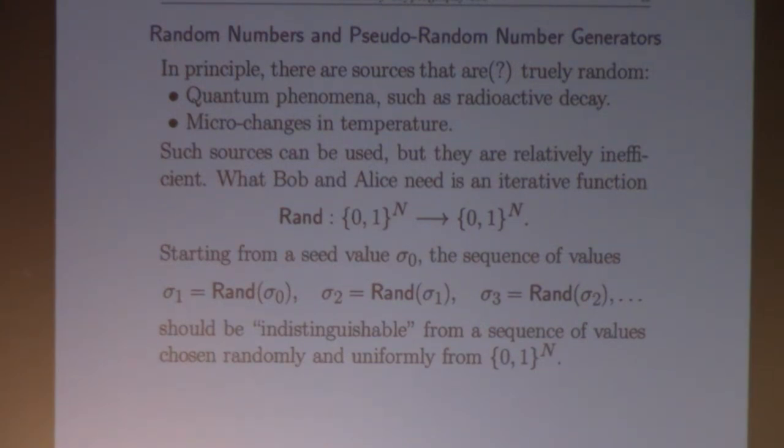You need hash functions to do digital signatures. You need pseudo-random number generators to do any sort of secure public key cryptography or digital signatures.